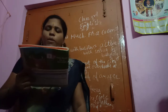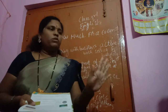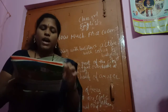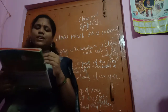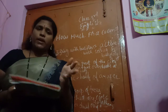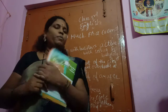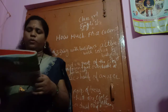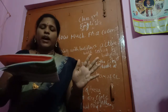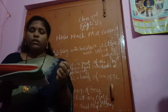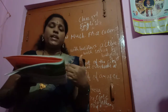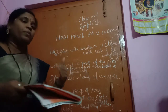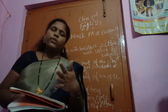Bikkubai saw a coconut seller and asked, 'How much is a coconut?' The seller said, 'Only two rupees.' Bikkubai said, 'That's too much — give it for one rupee.' The seller said, 'No sir.' Bikkubai asked, 'Do you know where I can get one for a rupee?' The seller said, 'Go to the waterfront and try.' Waterfront is a part of a city or town that overlooks a water body like a river or sea — near there you can buy for one rupee.